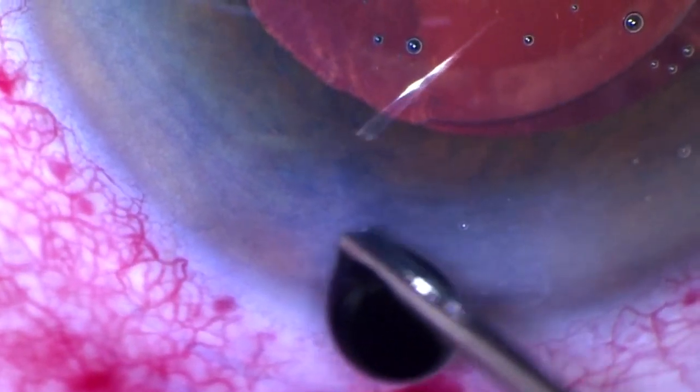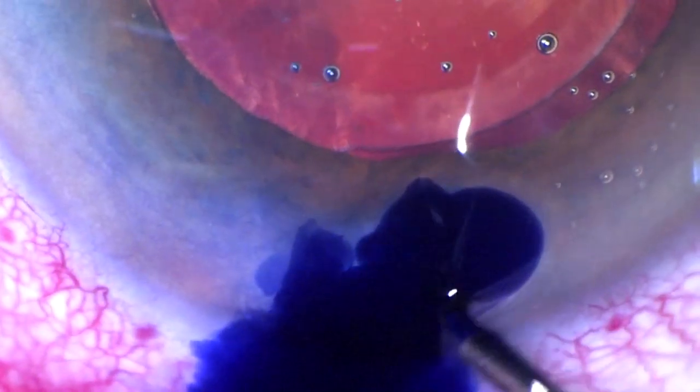With the availability of newer premium IOLs, these concerns also deal with the impact of cataract incisions on the optical quality of the eye. Therefore, well-made and well-placed incisions should allow for effective and comfortable phacoemulsification. They should be self-sealing and should induce minimal astigmatism.